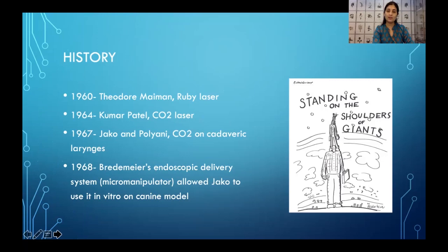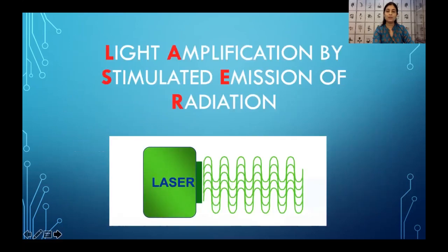The laser itself — the ruby laser — was first invented in 1960, and close on the heels of that, Kumar Patel from Bell Repositories discovered the CO2 laser. It was first applied by Jaco and Poryani on cadaveric larynges in 1967. With the development of the micromanipulator and the endoscopic delivery system, that allowed Jaco to use it first in vitro in a canine model the very next year in 1968.